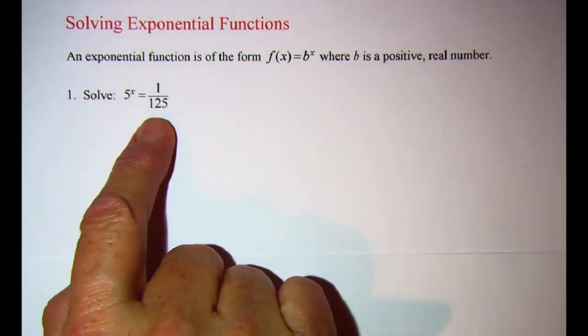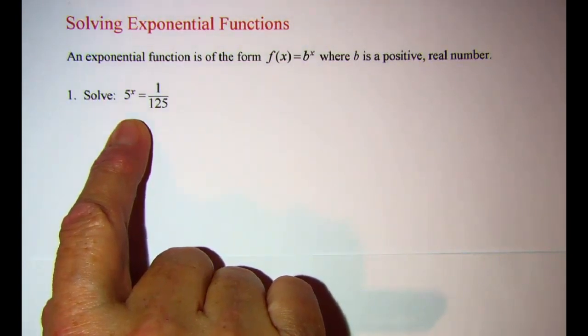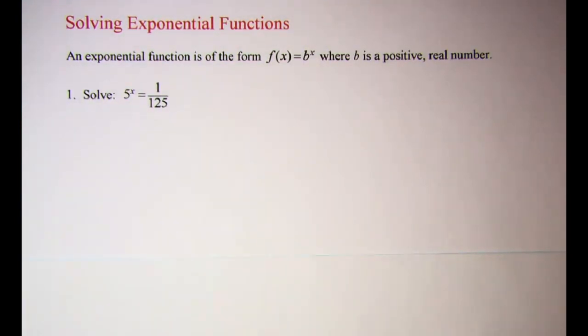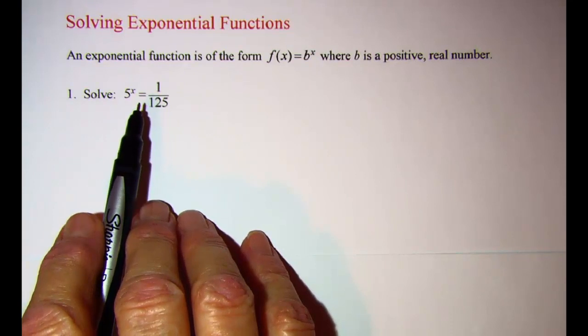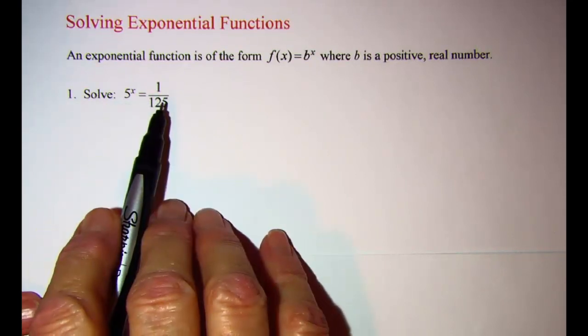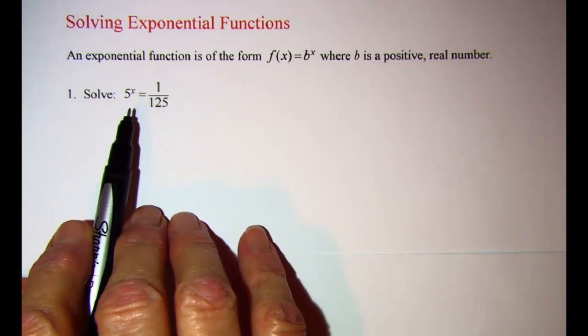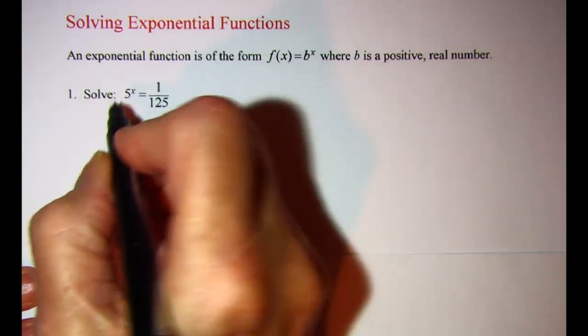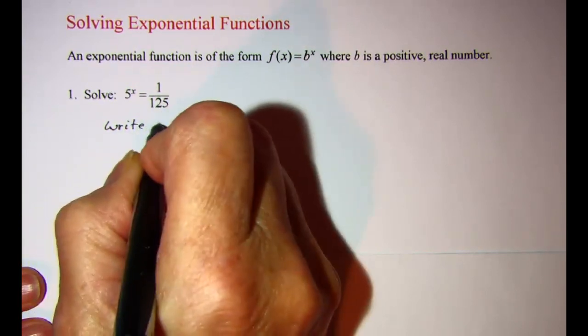So our first example is 5^x = 1/125. Now we're going to approach this problem by changing each side of the equation so that the exponential has a common base.